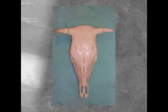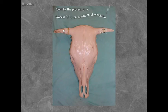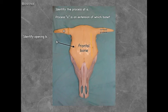Looking at the bovine skull, identify the process at A — that is the corneal process. Remember, 'corneal' refers to horn. Process A is an extension of the frontal bone. In the bovine, the frontal bone extends all the way back caudally.